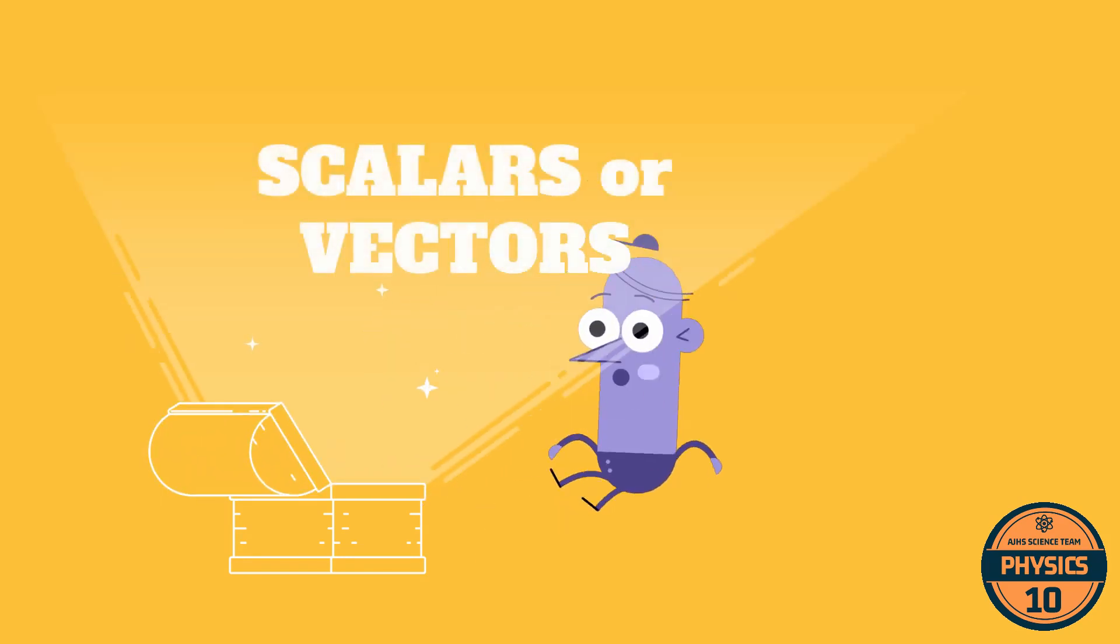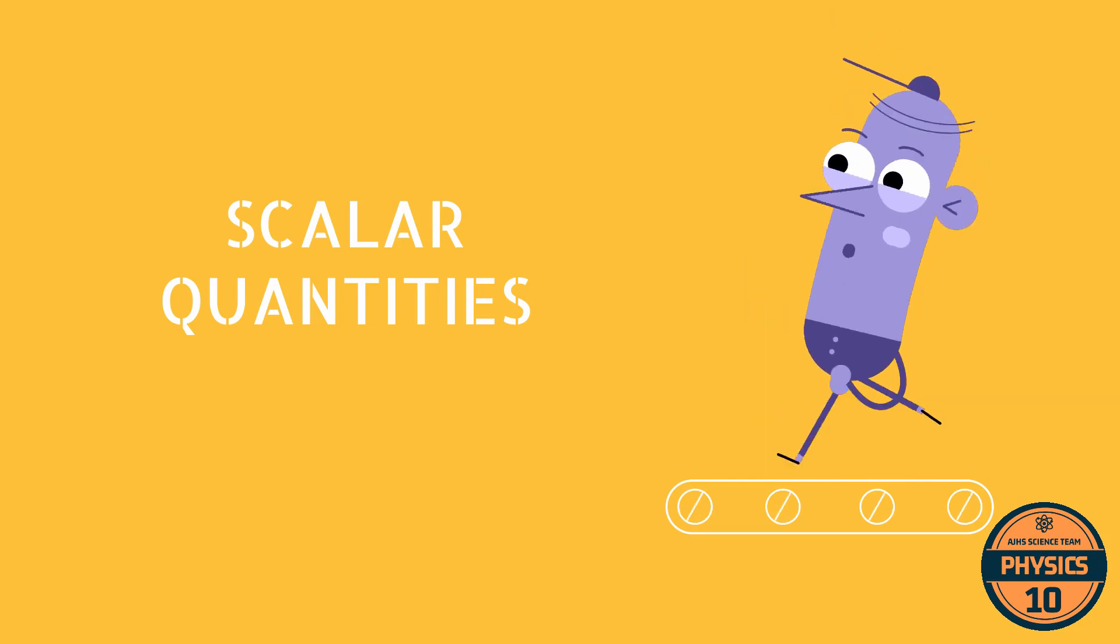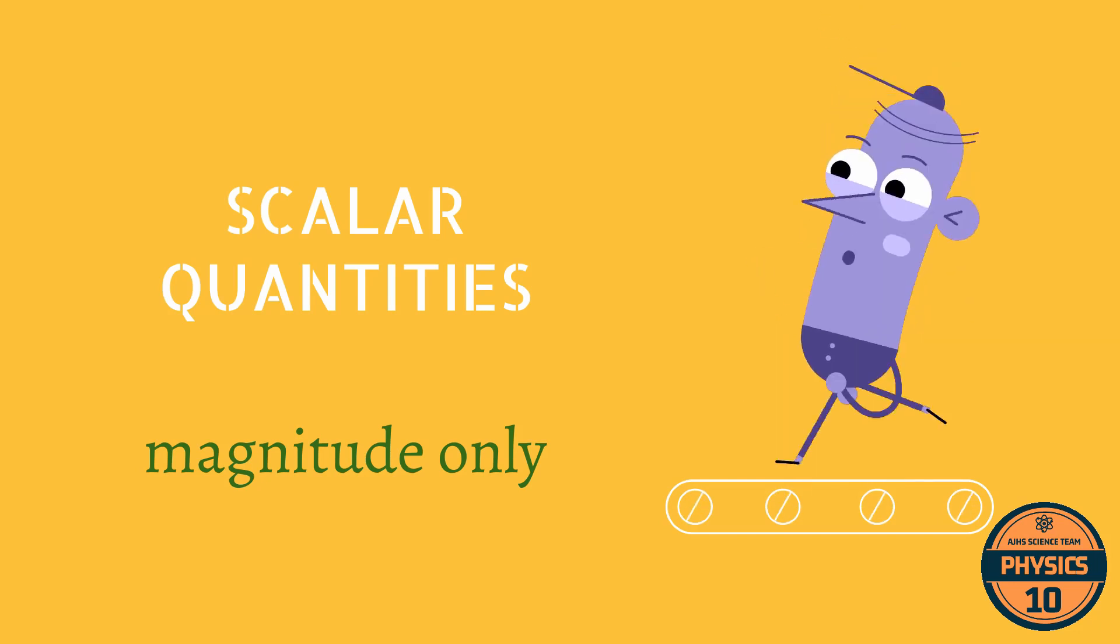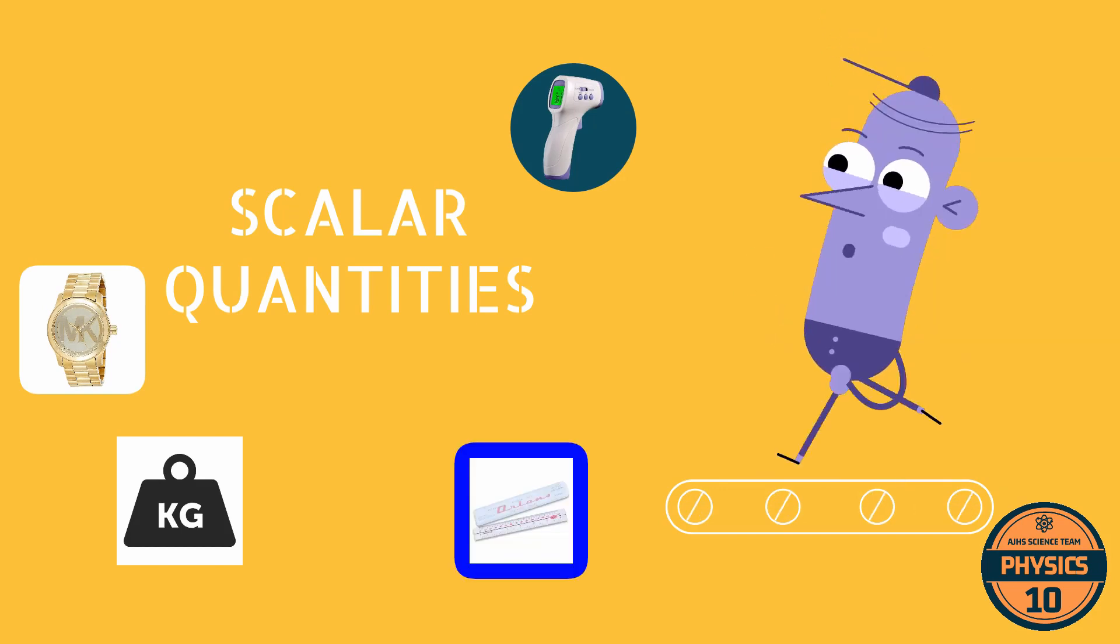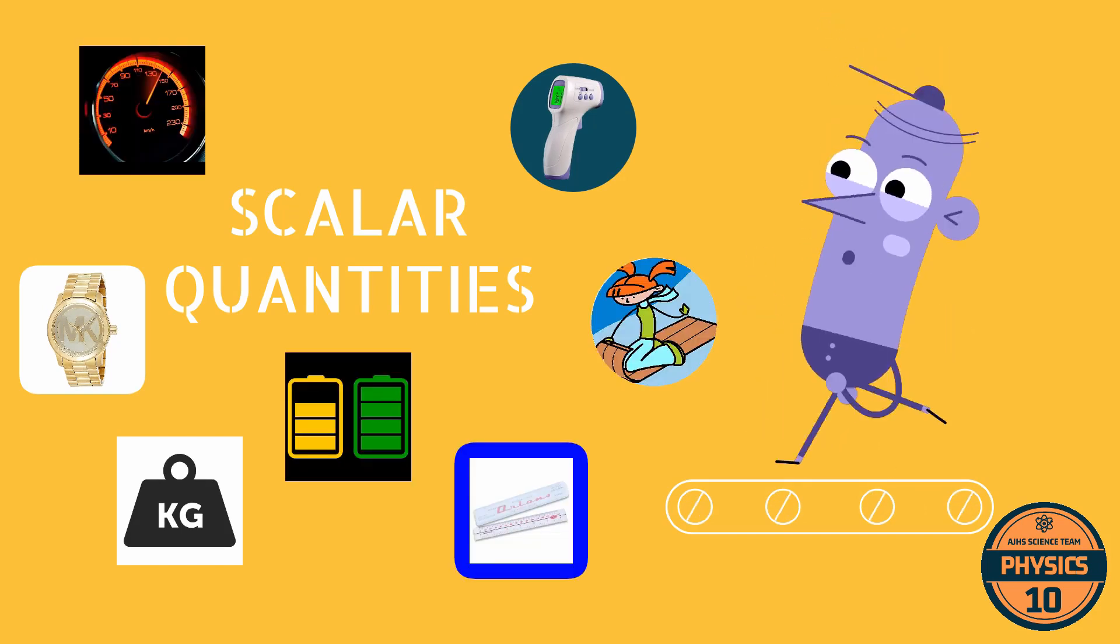Fundamental and derived quantities can also be classified as scalar or vector quantities. Scalar quantities, or scalars, are those with magnitude only and have no direction in space. Some examples of scalars are mass, time, temperature, length, speed, work, and energy.